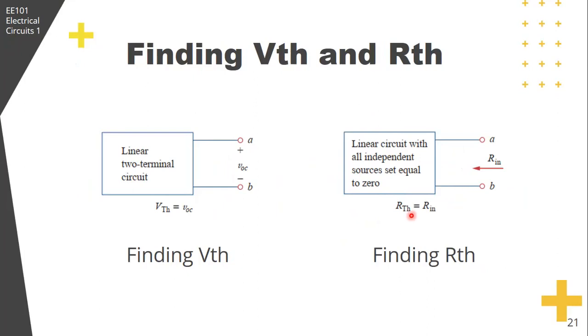How can we find VTH and RTH? VTH is just equal to the open circuit voltage, the no-load voltage. That is, without a load connected to the terminal AB. RTH is the input resistance at the terminals when the independent sources are turned off, as seen from terminal AB.